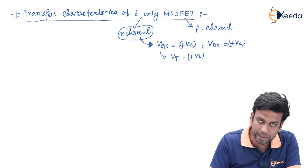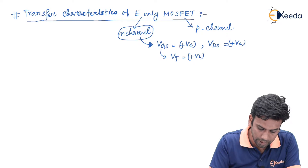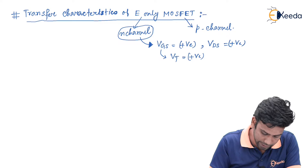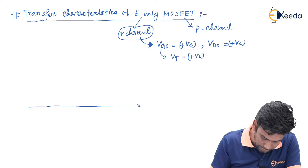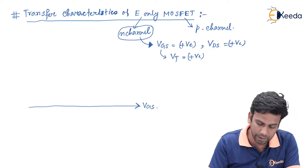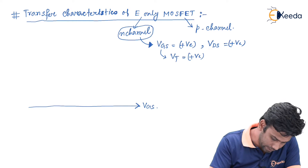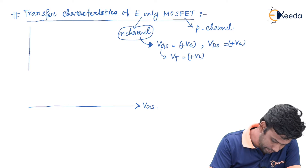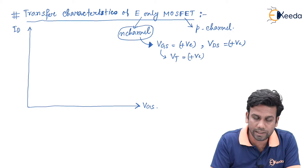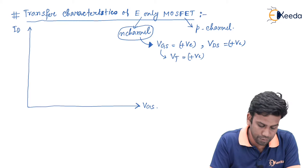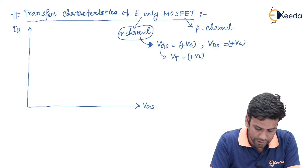If we draw the transfer characteristics of the N-channel E-only MOSFET, Vgs will be positive so it will be taken in the positive x-axis, and Id will be taken in the y-axis. In the y-axis we will plot only the saturated value of Id for different values of Vgs.